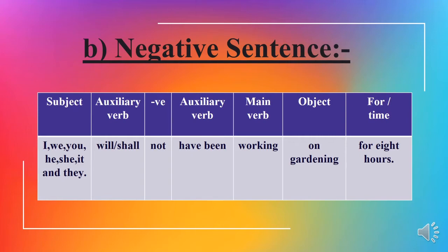Jab bhi fail mustakbilan mukamale jari ke manfi jumle banane lagein toh yeh tarika madd-e-nazar rakhein: sab se pehle subject lagate hain. Iske baad pehla auxiliary verb will ya shall lagate hain. Iske baad 'not' lagate hain, aur phir doosra auxiliary verb 'have been' lagate hain. Iske baad main verb lagate hain jiasse 'working,' phir object lagate hain jiasse 'on gardening,' iske baad 'for' aur time lagate hain jiasse 'for eight hours.'